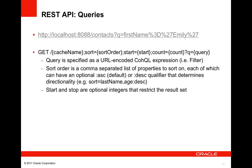The Coherence REST API also allows you to query caches for objects that match a filter or pattern. The simplest form of such a URL consists of the cache name followed by a URL-encoded COHQL expression. However, more complex requests can be made that include sort order and a subset of results to return.